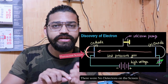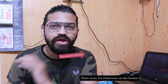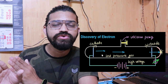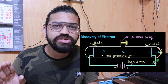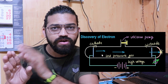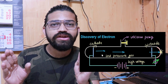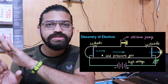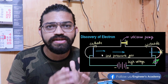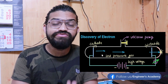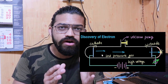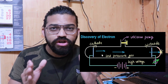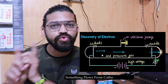He then did the same thing in the reverse direction. He drilled a hole at the anode and behind the anode on the glass tube, he painted a fluorescence material. He observed that rays are coming from the cathode and through the drilled hole, hitting the fluorescence screen. This particular fluorescence screen gave off light. So he found out that when voltage is applied between the two electrodes, there is something flowing from cathode to anode.